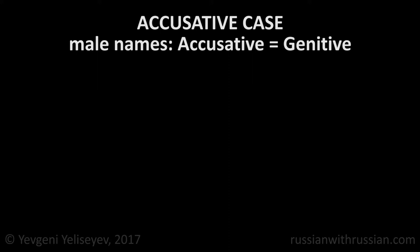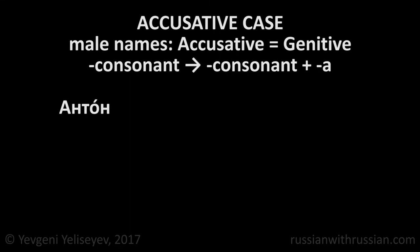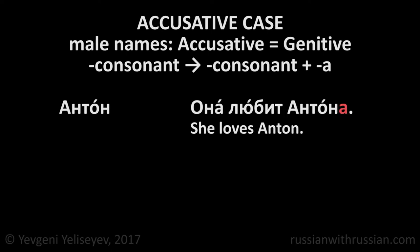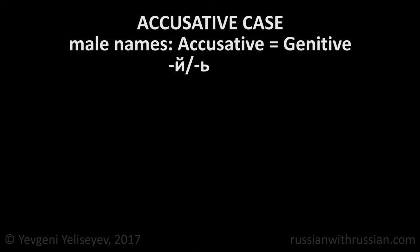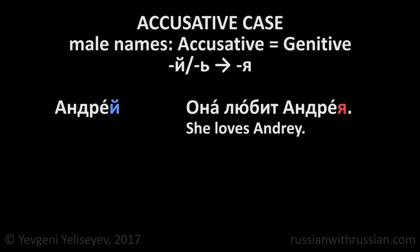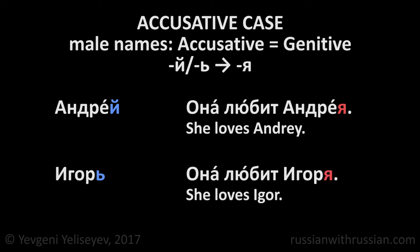Male names form the accusative case in the same way as the genitive. We already examined genitive case formation in our previous lessons, but I will remind the general rule: male names ending in a consonant add the ending А — Антон → она любит Антона; male names ending in Й add Я — Андрей → она любит Андрея — she loves Andrey; Игорь → она любит Игоря — she loves Igor. The pronouns меня, тебя, нас, вас, его, её, and их may be put before or after the verb: я люблю тебя or я тебя люблю.